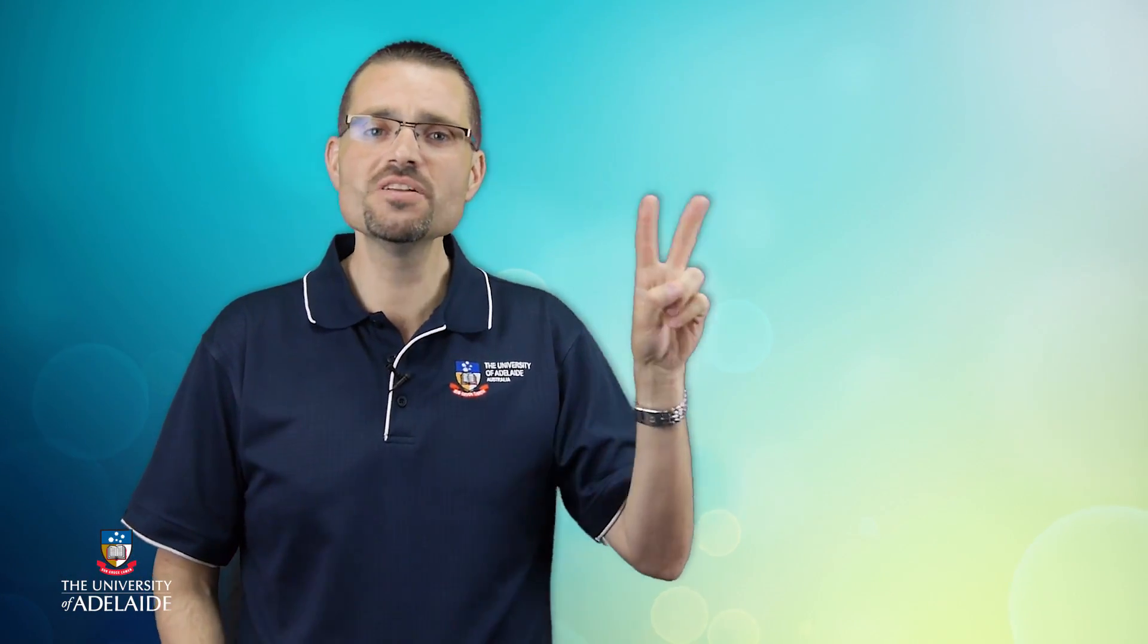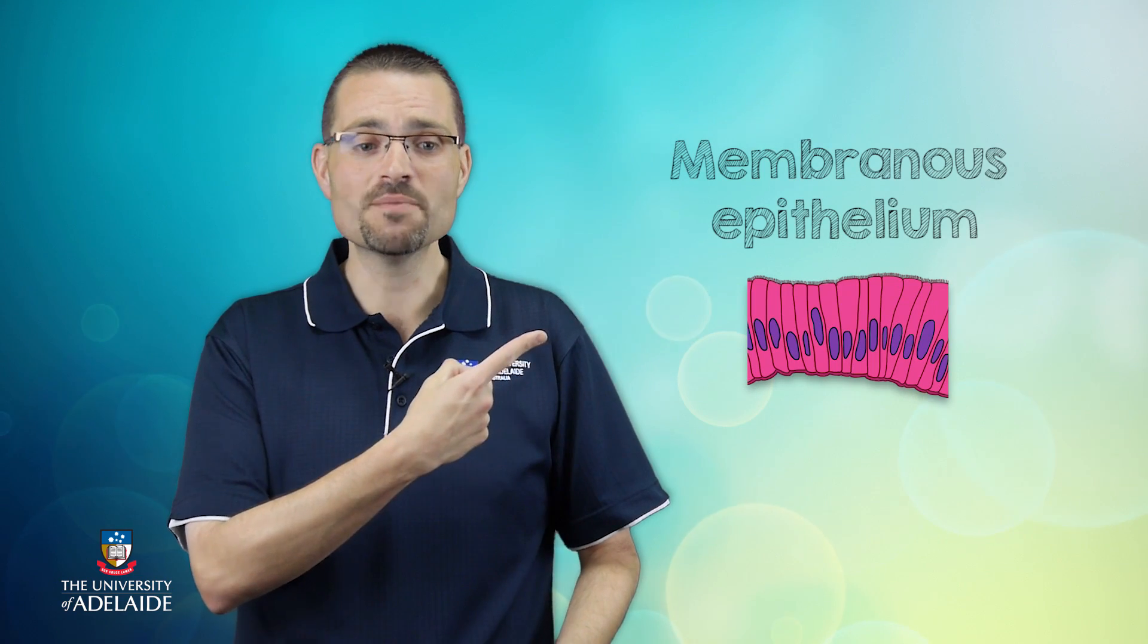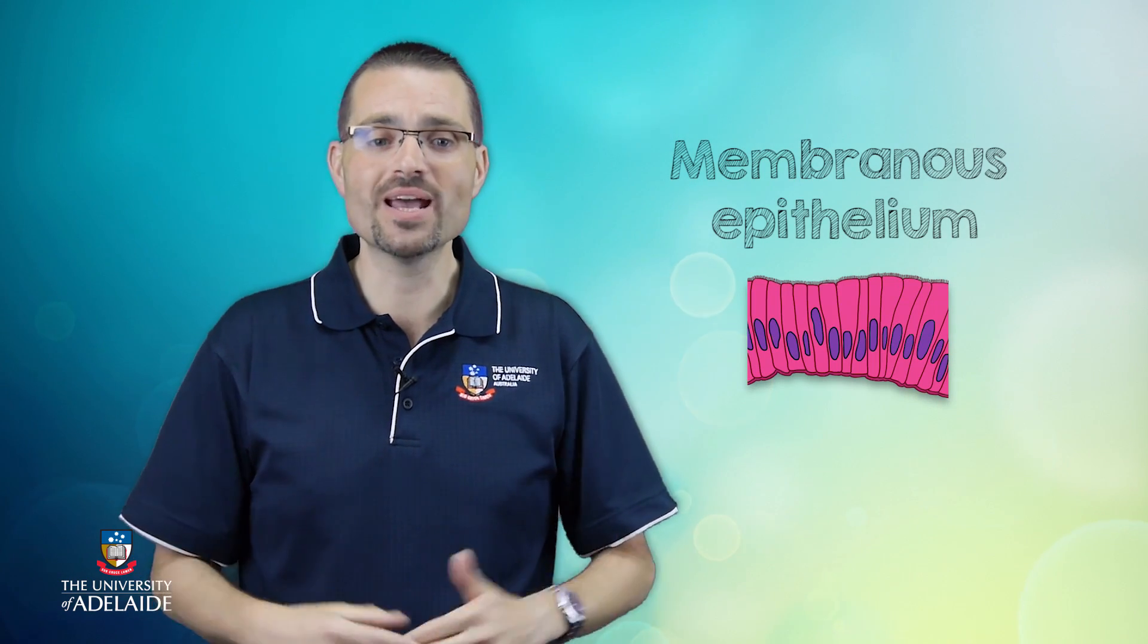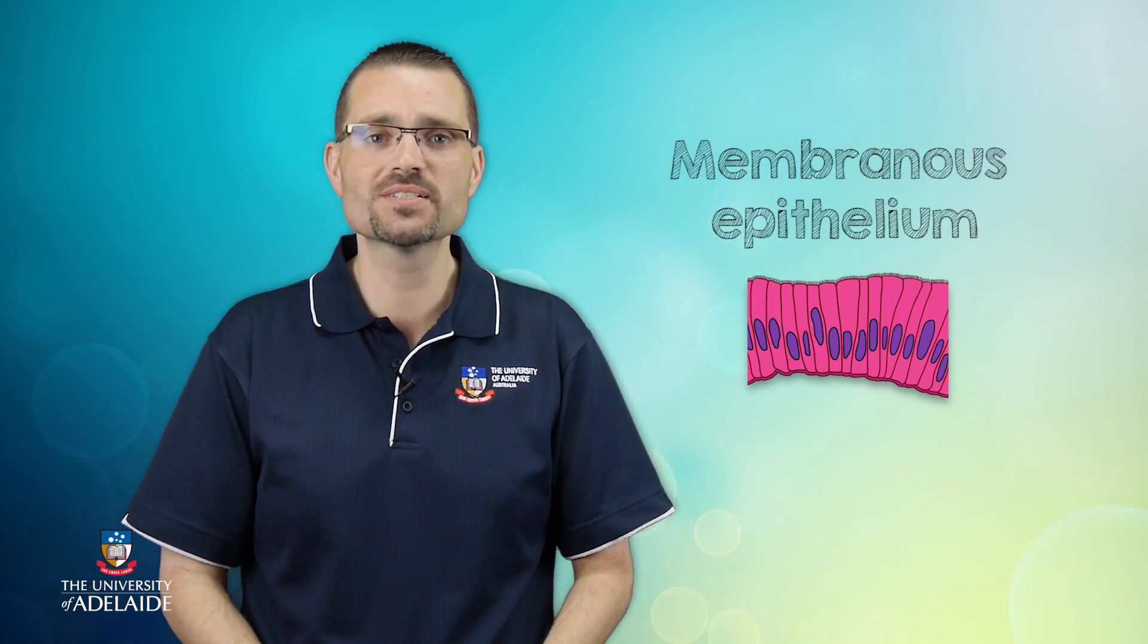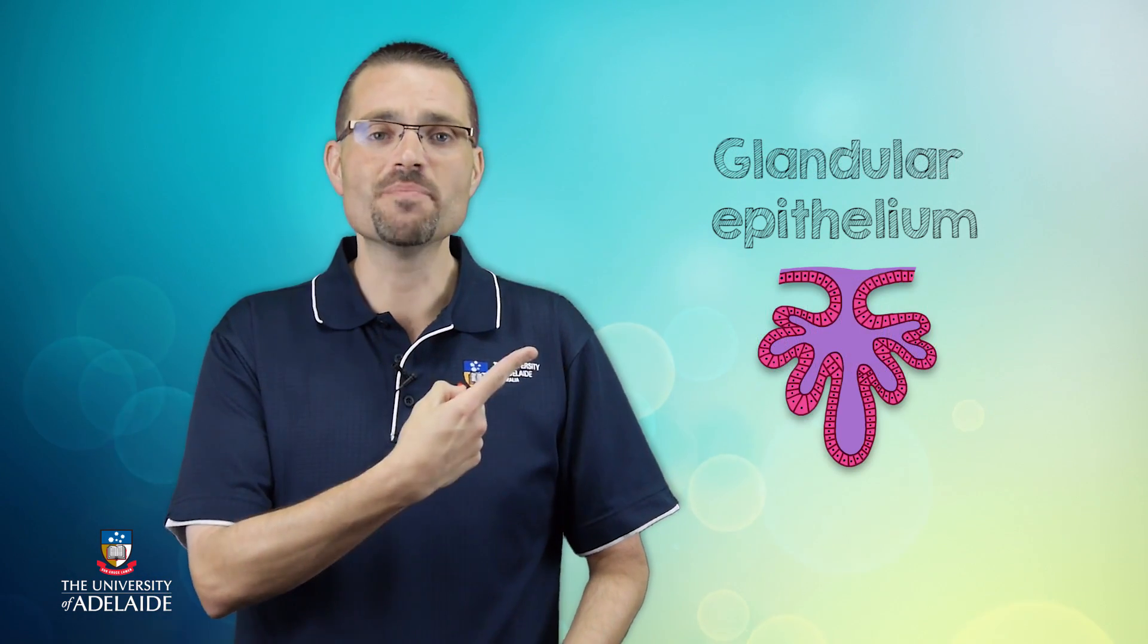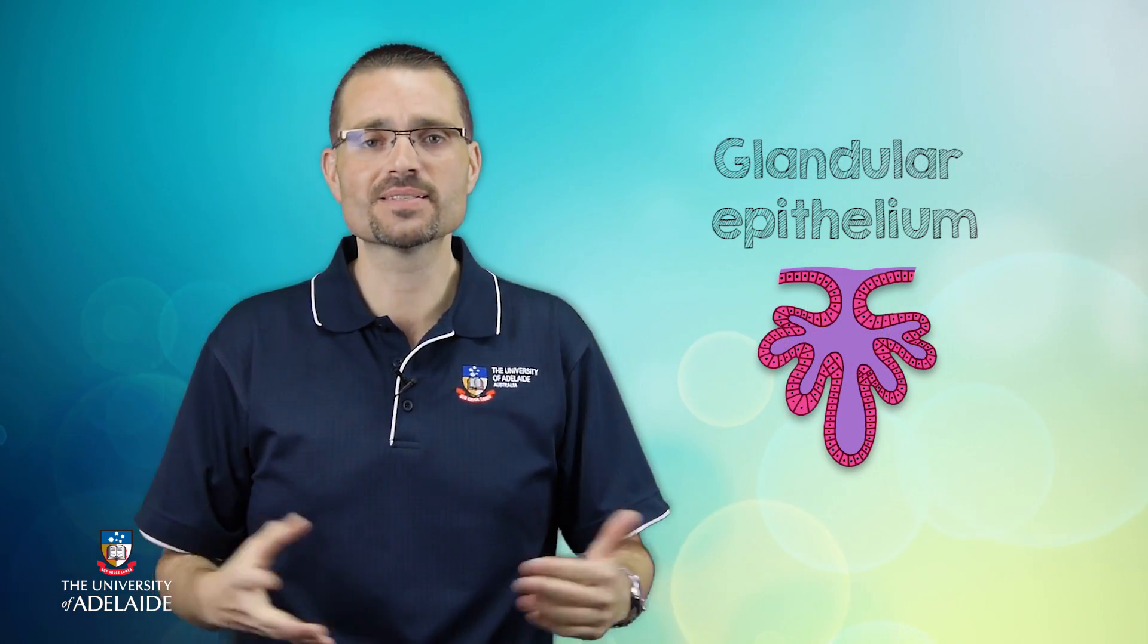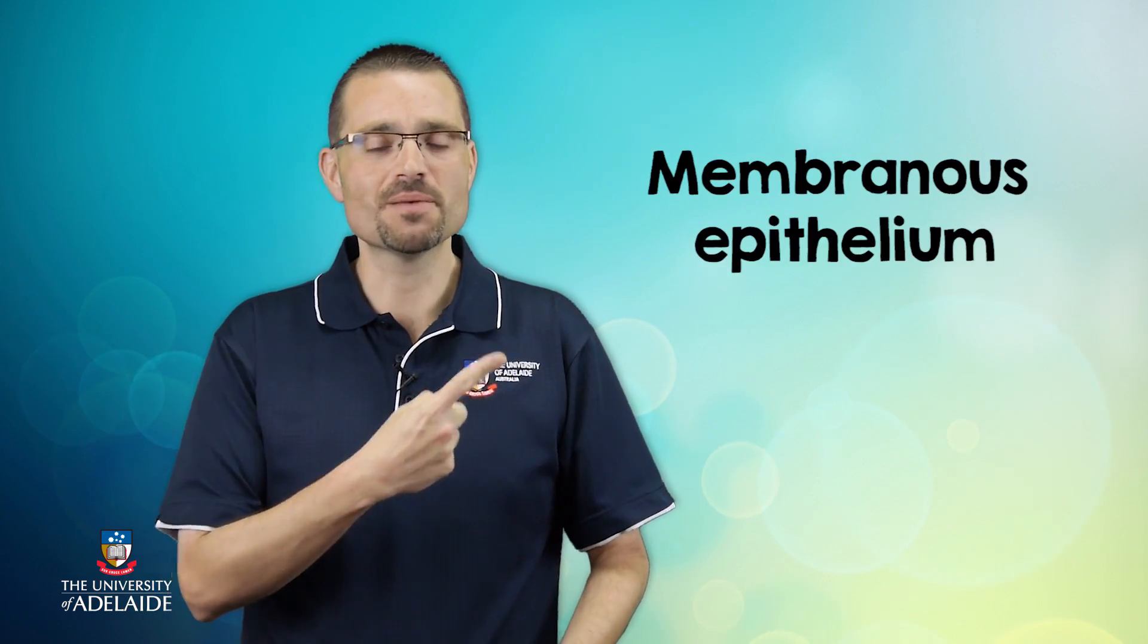In the previous video, Rachel mentioned that there are two different types of epithelial tissue present in the human body: membranous epithelium which covers external and internal body surfaces, and glandular epithelium which is better known as glands. Later this week Rachel will talk about glands in more detail, but for now let's talk about membranous epithelium.